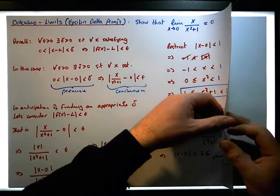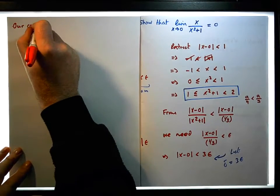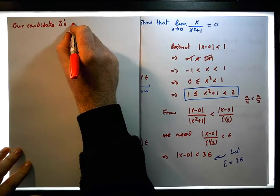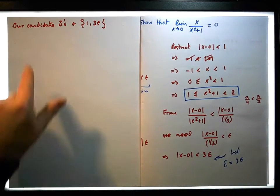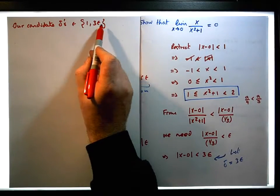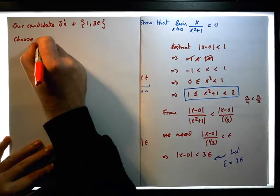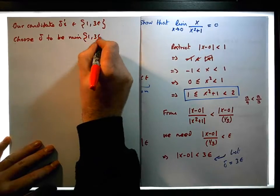So our candidate deltas are elements of the set {1, 3ε}. Let's choose the smaller of these two values. We don't know which one is smaller, so let's choose delta to be the minimum of 1 and 3 times epsilon.